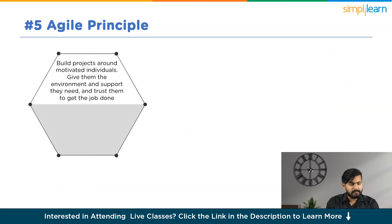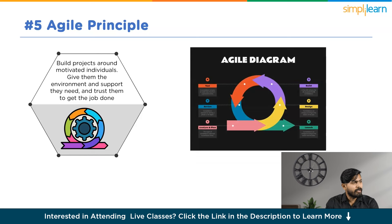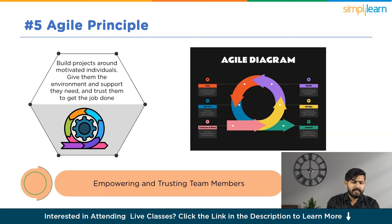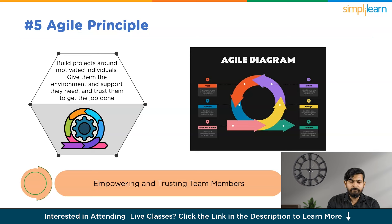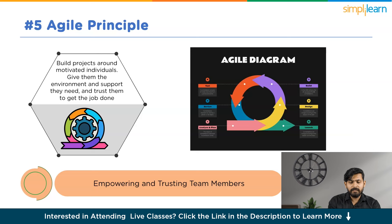Now let's discuss our fifth principle: building a project revolves around motivated individuals — give them the environment and support they need and trust them to get the job done. A fundamental aspect of the Agile philosophy involves empowering individuals and teams by instilling trust and autonomy. Building an Agile team often requires careful consideration of the right people and skill sets with clearly defined responsibilities before the start of the project.